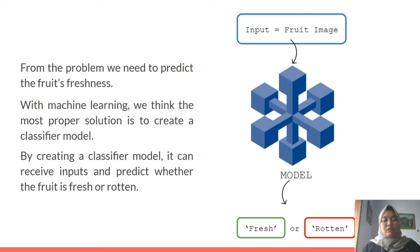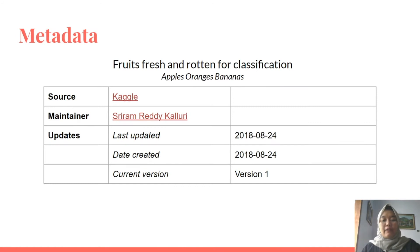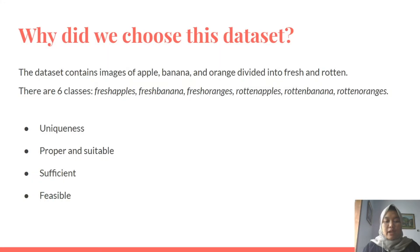From this problem, we need to predict the fruit's freshness. With machine learning, we think the most proper solution is to create a classifier model. By creating a classifier model, it can receive inputs and predict whether the fruit is fresh or rotten. For this project, we use the Fruit Fresh and Rotten for Classification dataset from Kaggle. The dataset contains images of apples, bananas, and oranges, and each fruit is divided into fresh and rotten — in total, there are six classes.